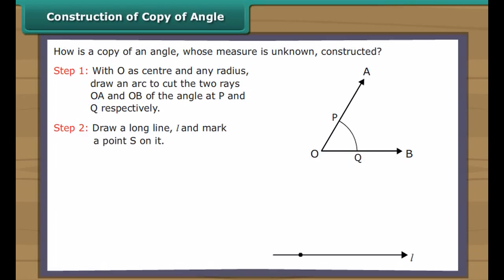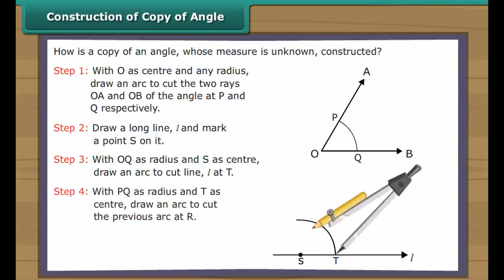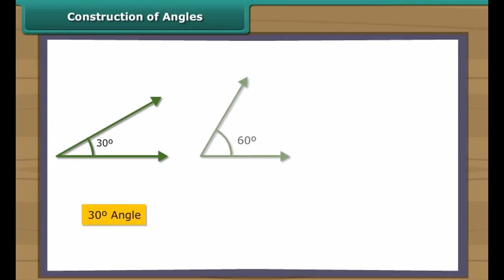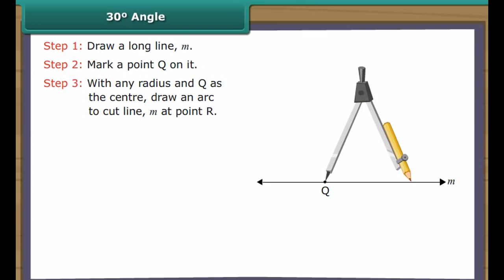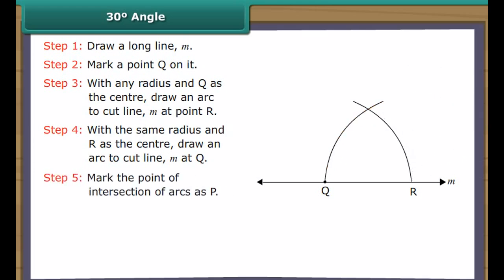Construction of special angles. Let us construct some special angles one by one: 30 degree, 60 degree, and 120 degree angles. Construction of 30 degree angle: Draw a long line M and mark a point Q on it. With any radius and Q as centre, draw an arc to cut line M at point R. With the same radius and R as centre, draw an arc. Mark the intersection of arcs as P. Join P to Q. Bisect the angle. Angle PQS equals angle SQR equals 30 degrees.